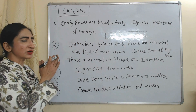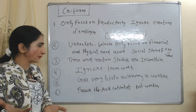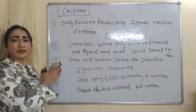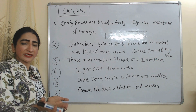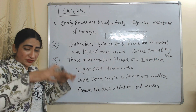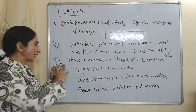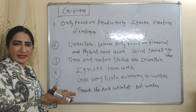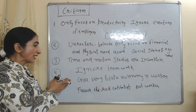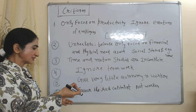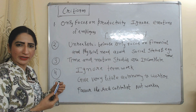Now we will discuss criticism. This theory only focuses on productivity and ignores the emotions of employees. It is considered an unrealistic theory because it only focuses on financial and physical needs of employees and ignores social status and ego needs of employees — but actual employees have social status as well as ego needs. Additionally, the time and motion studies given by Taylor are considered incomplete. This theory ignores teamwork, gives very little autonomy to workers, and is seen as favoring rich capitalists rather than workers.